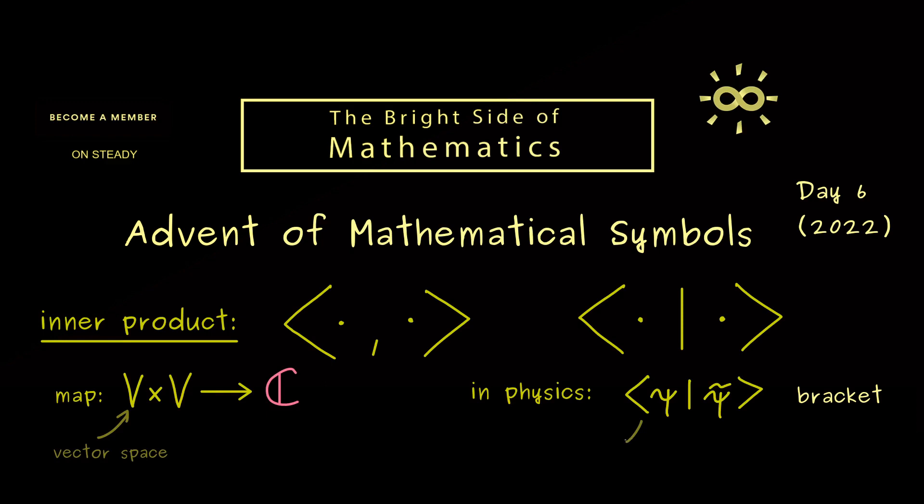However then in physics you also see a funny thing, they separate this bracket. On the one hand they say we have a so called bra vector psi and on the other hand a so called ket vector psi tilde. And then you can argue putting both things together gives us a so called bracket.